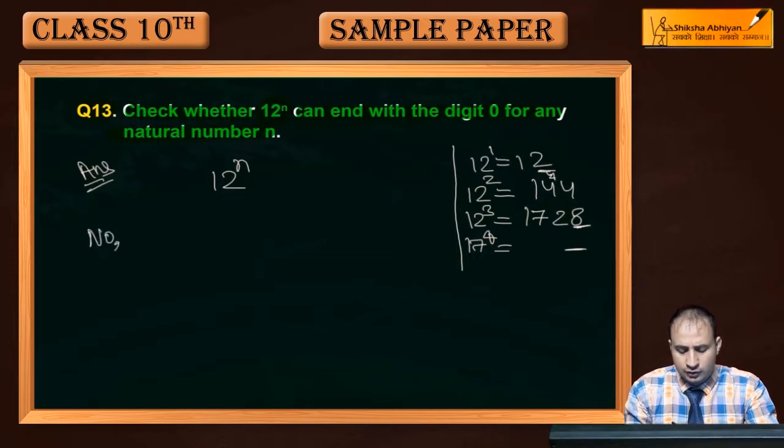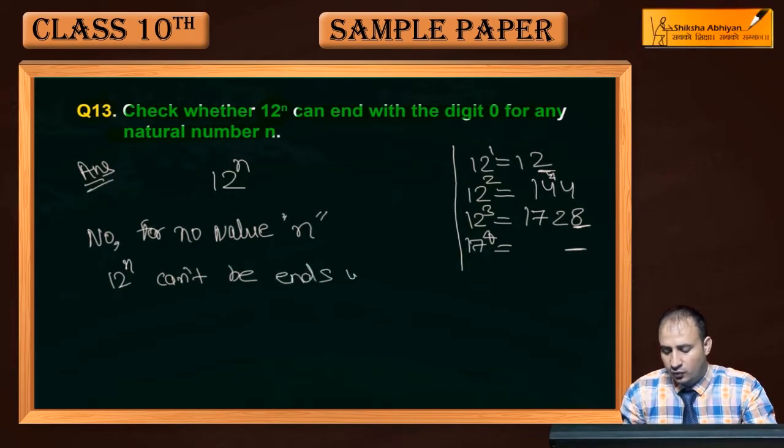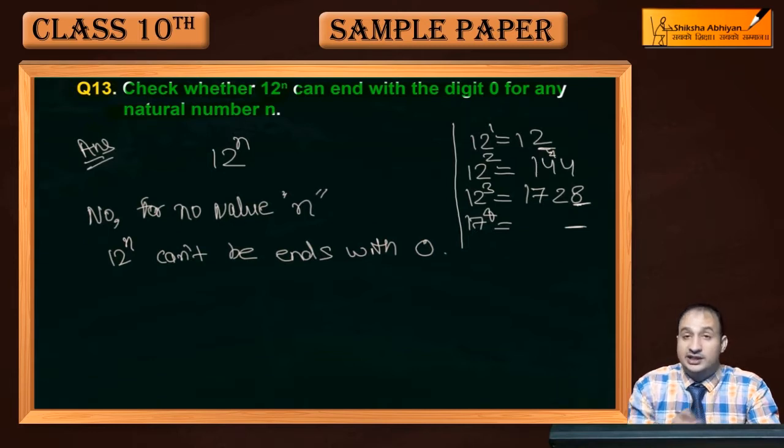No, for no value of n can 12 to the power n end with 0. This will not be 0. Why not? I will tell you.